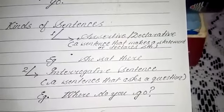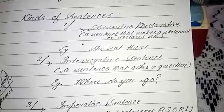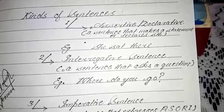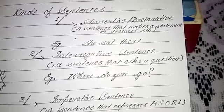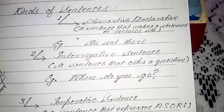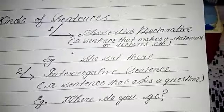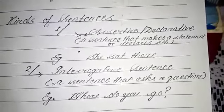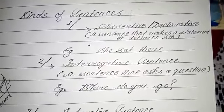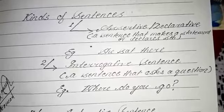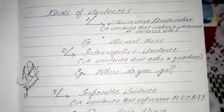An assertive or declarative sentence is a sentence that makes a statement or declares something. For example: 'She sat there.' We can take many more examples like: 'I go there,' 'she comes to me to be taught,' 'she goes there,' and so on.